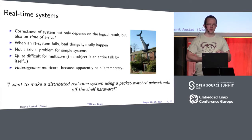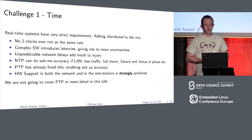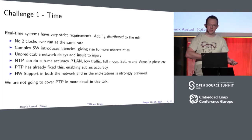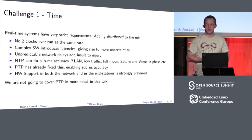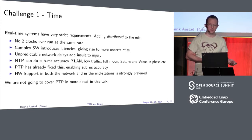We're going to add network to all of this and see why this is an interesting problem. When you do that, you open yourself up to a new set of challenges. One of them is time — it doesn't matter if you produce your result at the correct time if you don't know what time it is. No two clocks will ever run at the same rate. The software stack, the temperature, and the voltage all affect your clocks. You have NTP, which you can tune to sub-millisecond accuracy if you do absolutely everything right, and then you have Precision Time Protocol, which pretty much solves this problem.